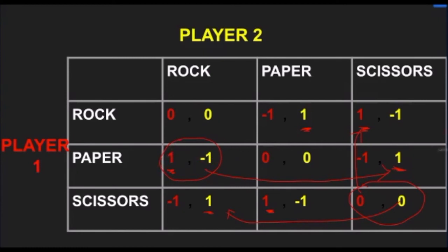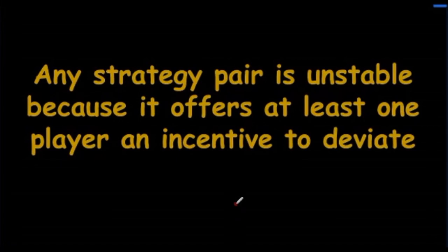So, we see that none of the strategy pairs are stable as it provides an incentive for a player to deviate. So, there is no Nash equilibrium of this game and there is no definite outcome that will happen.